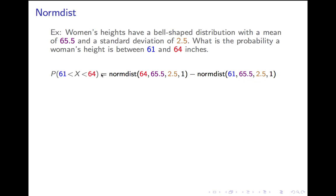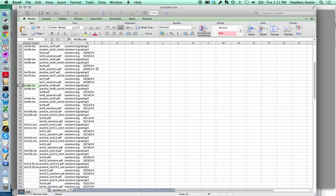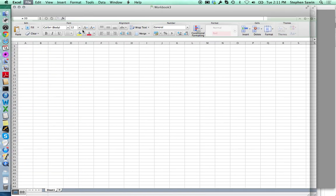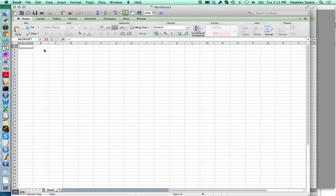We type this into Excel, equals normdist, et cetera, minus normdist, et cetera, and we get 23.8%. I'm going to show you that real quick. In the optional examples lecture, I will do a number of examples, but I'm just going to show you this one.